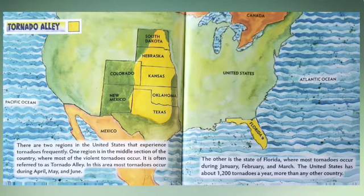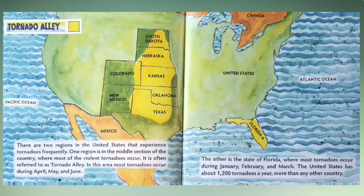There are two regions in the United States that experience tornadoes frequently. One region is in the middle section of the country, where most of the violent tornadoes occur — it is often referred to as Tornado Alley. In this area, most tornadoes occur during April, May, and June. The other is the state of Florida, where most tornadoes occur during January, February, and March. The United States has about 1,200 tornadoes a year, more than any other country.